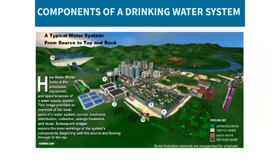Now we'll walk through the typical components of a water system, following the water as it enters the facility, goes through the treatment process, and is delivered to the consumer. As discussed in the first session in this series, water systems generally get their water from surface water or groundwater aquifers. Whenever possible, water systems seek to use raw water of the highest quality and sufficient quantity to increase efficiency and limit the need for additional water sources and treatments.